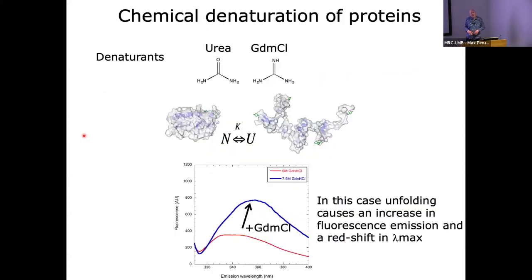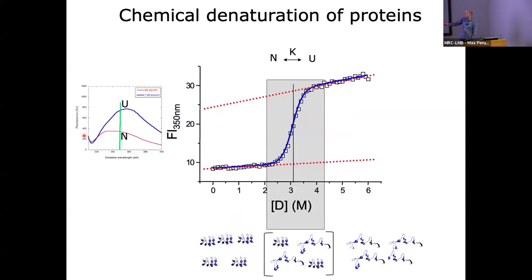To show you how sensitive fluorescence is and how well it can report, we're going to look at protein folding with these two proteins. When you denature the protein, the fluorescence groups get exposed. In this case, when you add guanidinium chloride, you get both a shift in the maximum but also a big increase in tryptophan fluorescence emission. So we can just take one wavelength of emission and follow this process of denaturation as you increase the denaturant concentration.